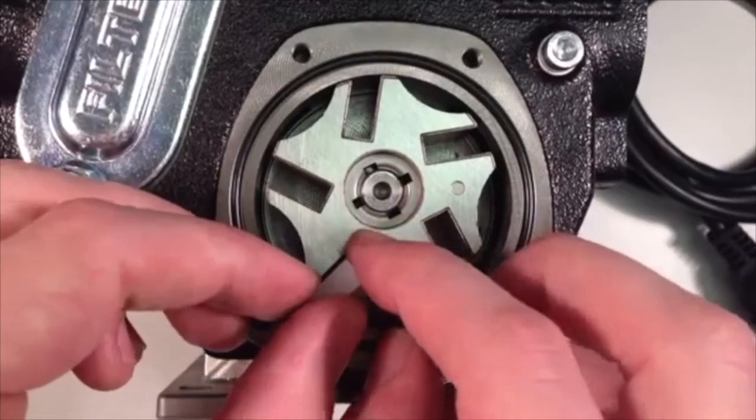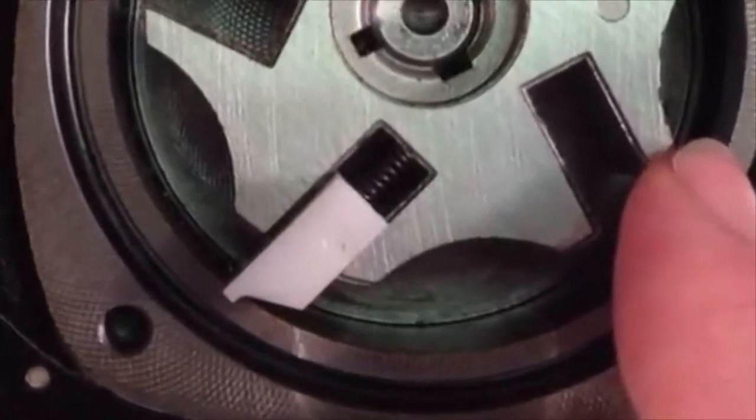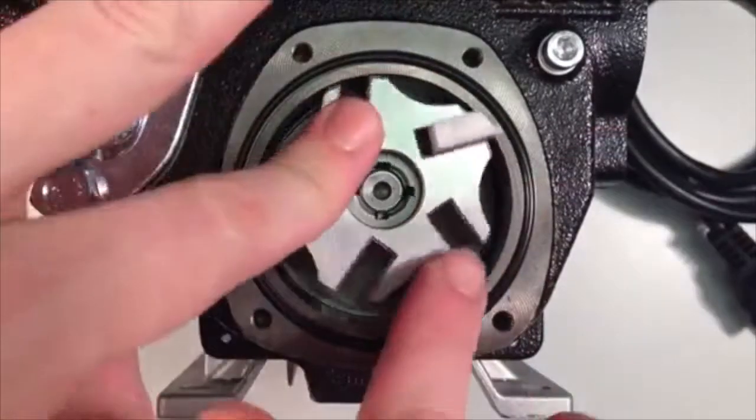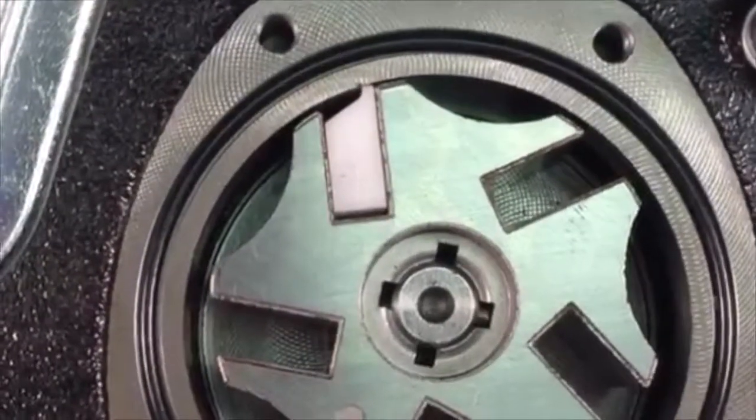Take the first vane and partially insert it into the rotor of the pump. The spring on the vane should be tucked into the recess. Do not push the vane down the whole way at this time. Instead, rotate the rotor and compress the spring before pushing down fully.